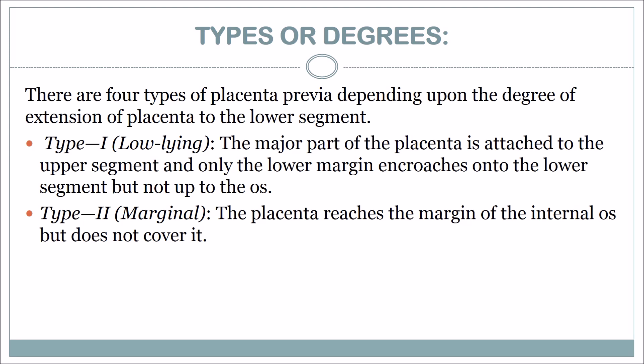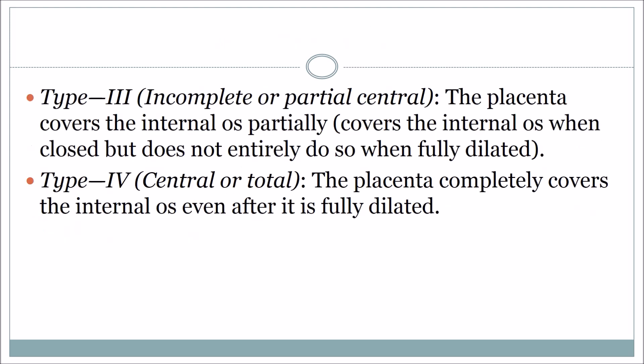There are four types of placenta previa depending upon the degree of extension of the placenta to the lower segment. Type 1 is low-lying: the major part of the placenta is attached to the upper segment and only the lower margin encroaches onto the lower segment but not up to the os. Type 2 is marginal: the placenta reaches the margin of the internal os but does not cross it. Type 3 is incomplete or partial central: the placenta partially covers the internal os when closed but does not do so when fully dilated. Type 4 is central or total: the placenta completely covers the internal os even after it is fully dilated.